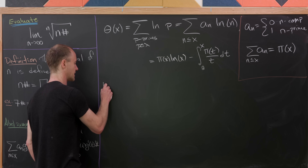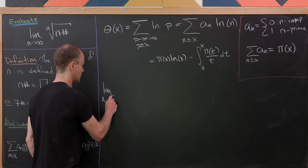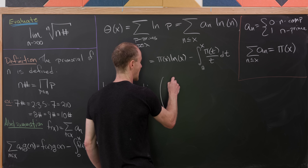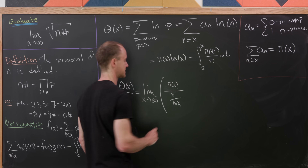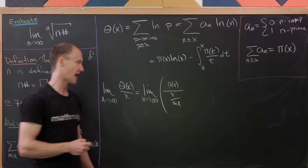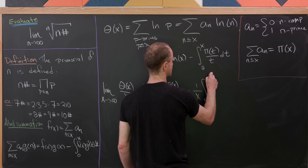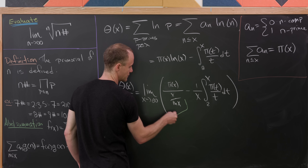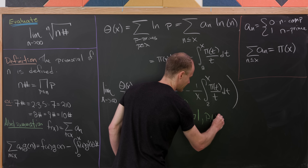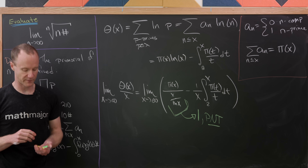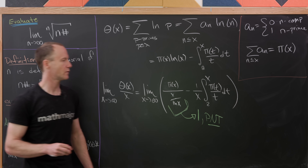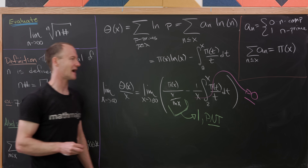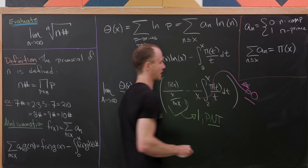Now from here, we're going to look at the following limit: the limit as x goes to infinity of θ(x)/x. That's going to turn into the limit as x goes to infinity of [π(x)/(x/log x)], minus 1/x times the integral from 2 to x of π(t)/t dt. We're going to use a very famous theorem to know that the first part equals 1 — and that famous theorem is the prime number theorem. We're not going to prove that here. It turns out that the limit of the other part equals 0, which you can prove with the prime number theorem as well — I'll leave that as a homework calculation.